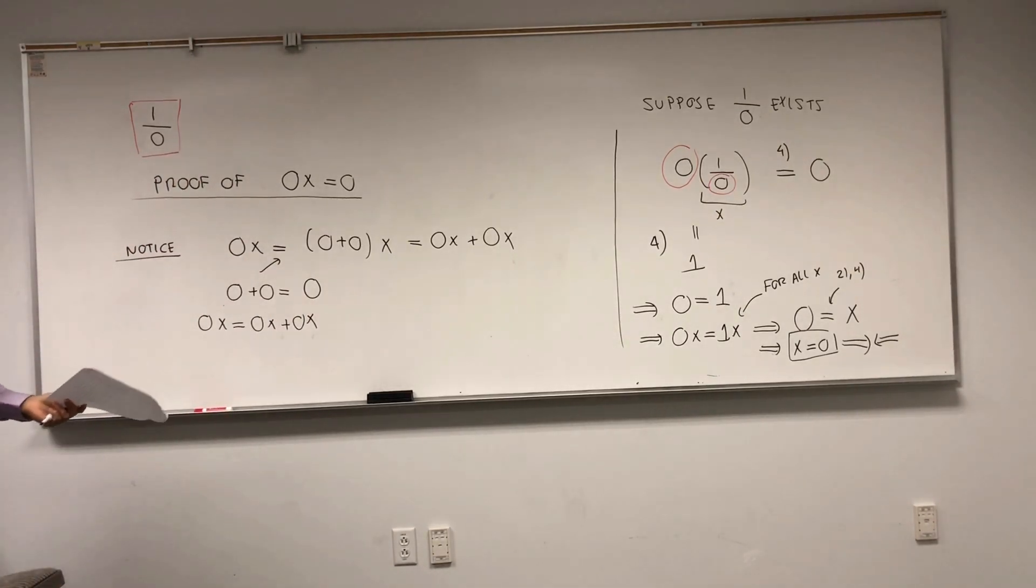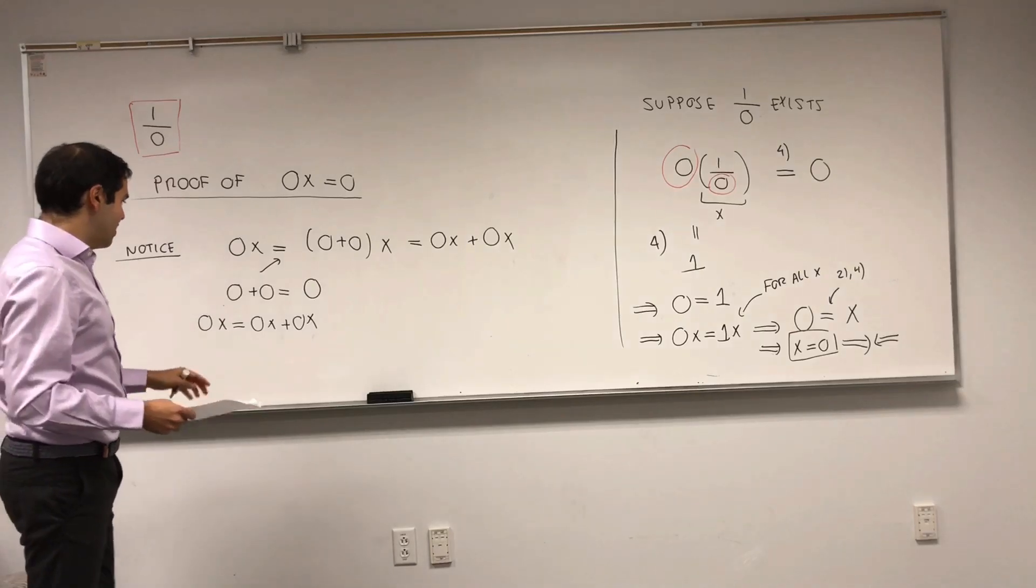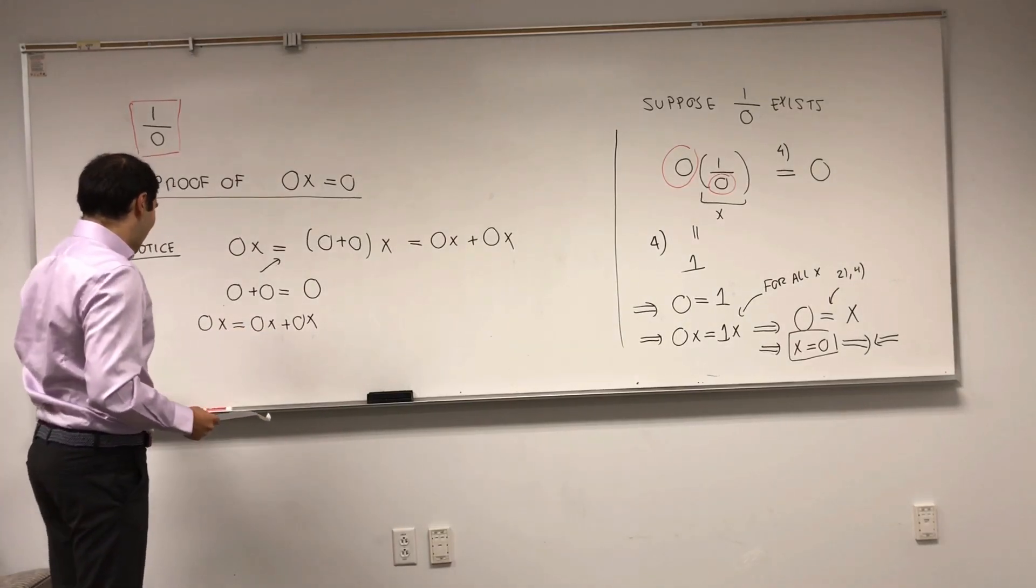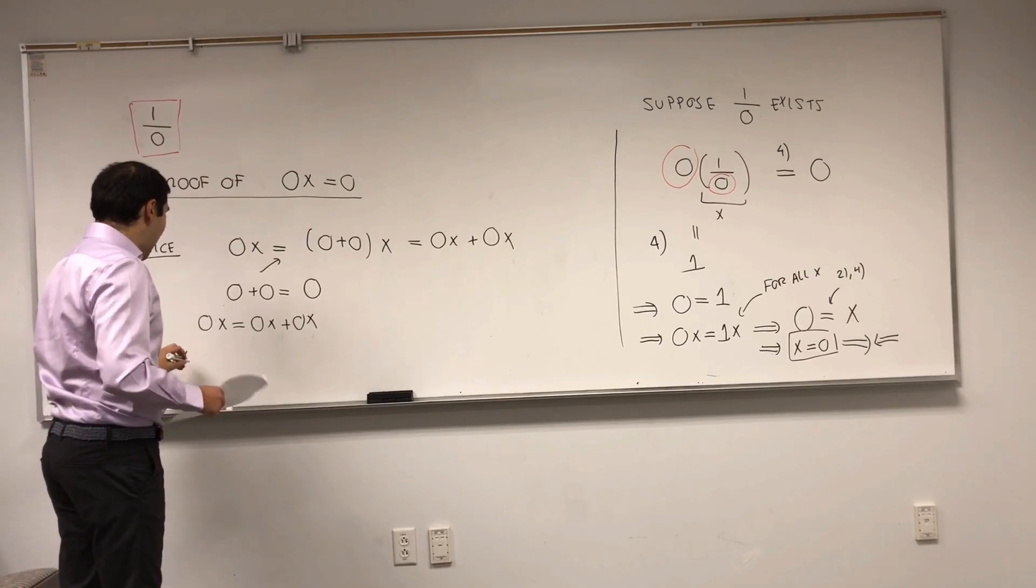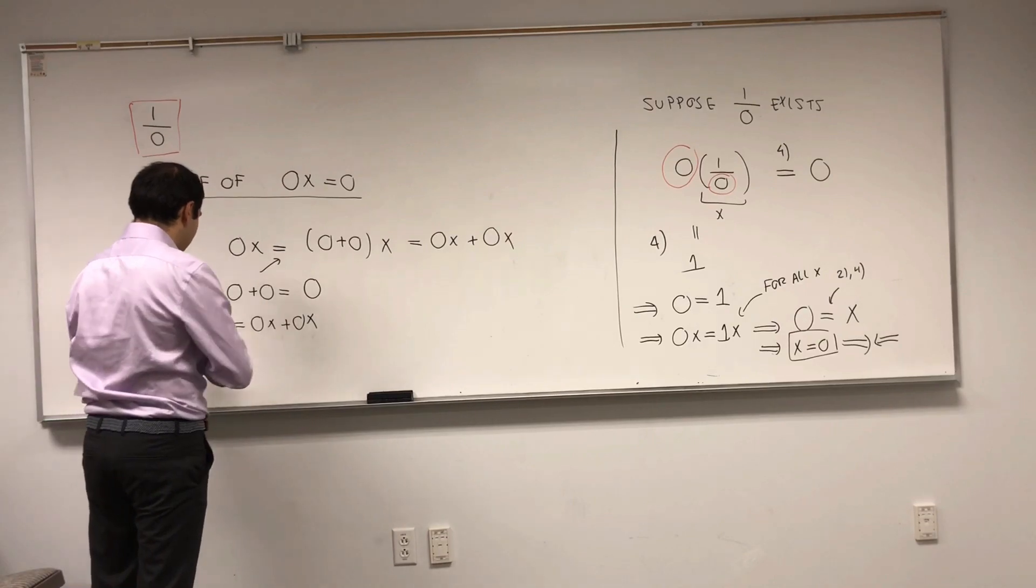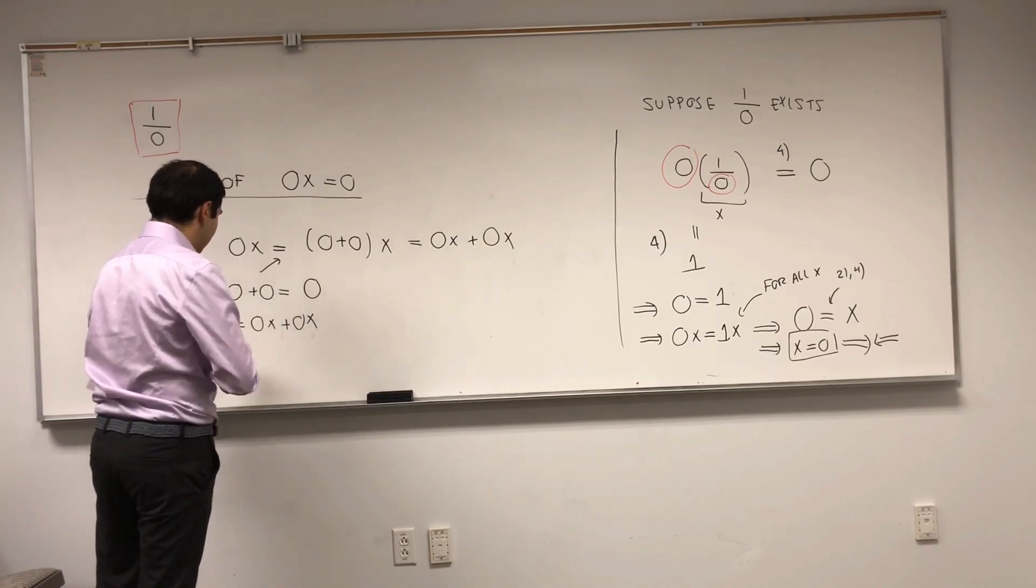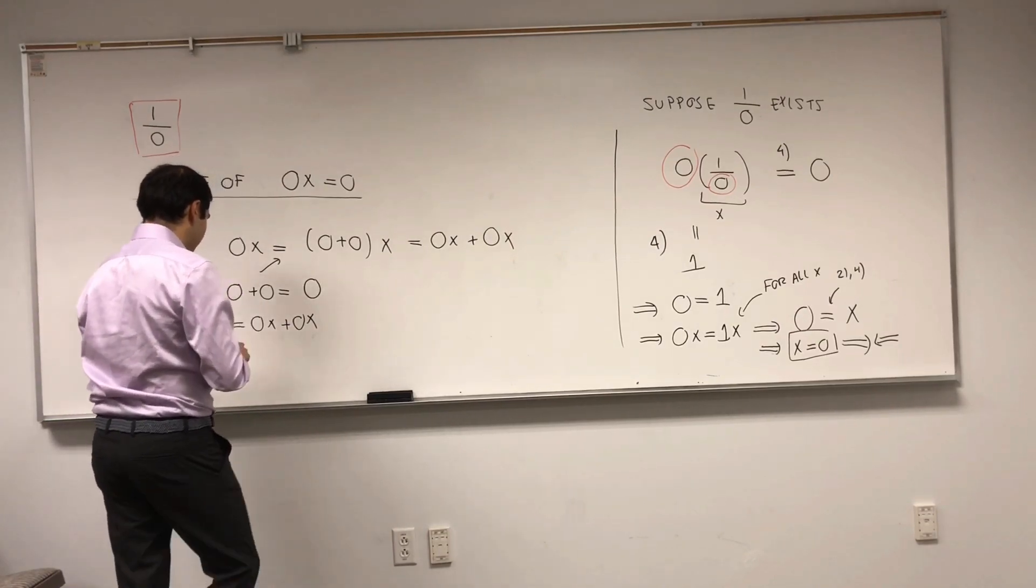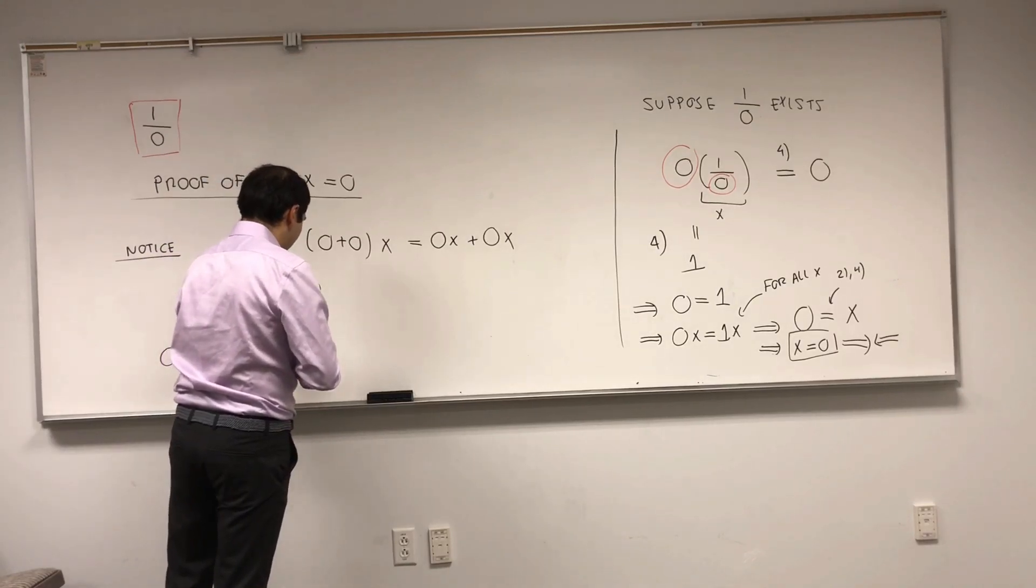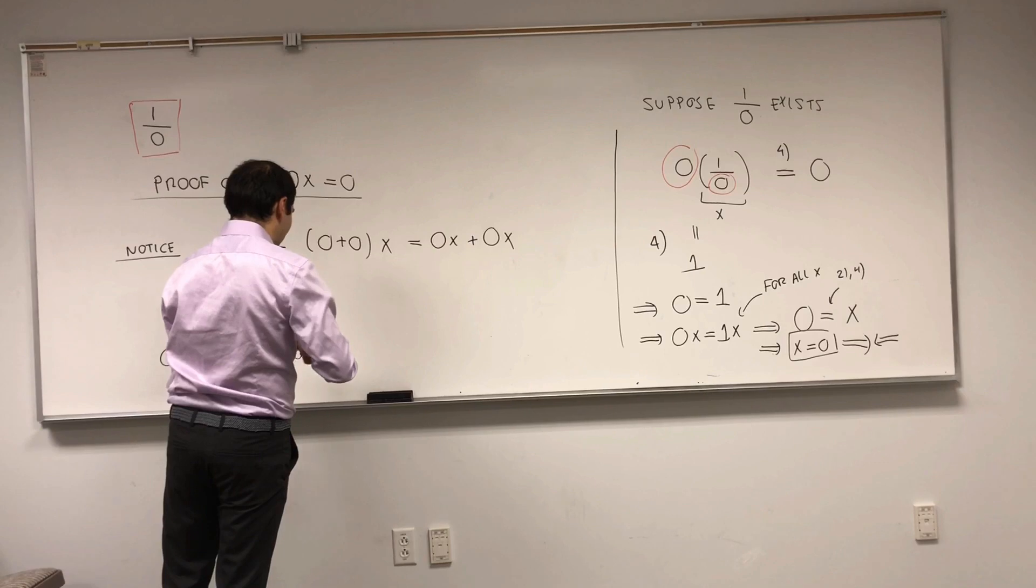And, now, the nice thing is, and this is also an algebraic thing, in those rings, we can also subtract. Namely, we can add minus 0x to this. If you'd like, we can add minus 0x equals 0x plus 0x minus 0x.